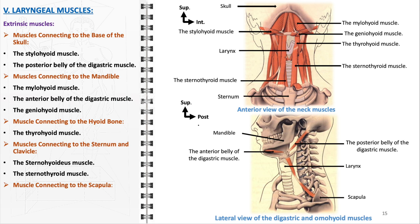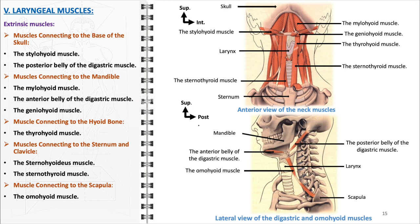The omohyoid muscle, connecting to the scapula, extends from the scapula to the hyoid bone and is involved in the stabilization and depression of the hyoid bone and larynx. Each of these extrinsic laryngeal muscles contributes to the complex mechanisms of swallowing, speaking, and breathing, working in concert to adjust the position of the larynx and ensure its optimal alignment for various functions.